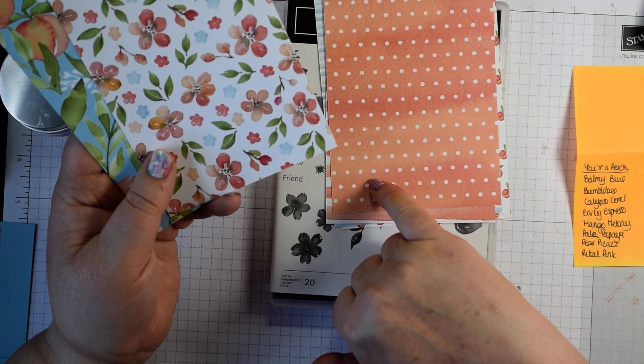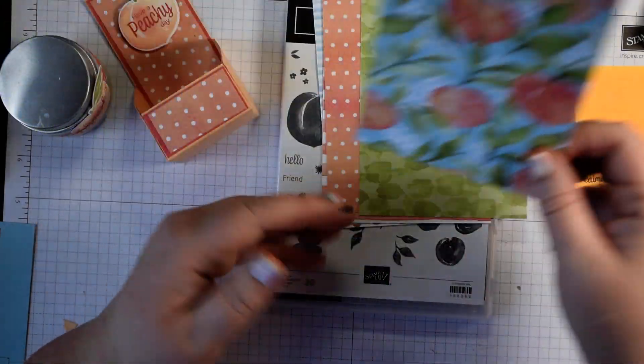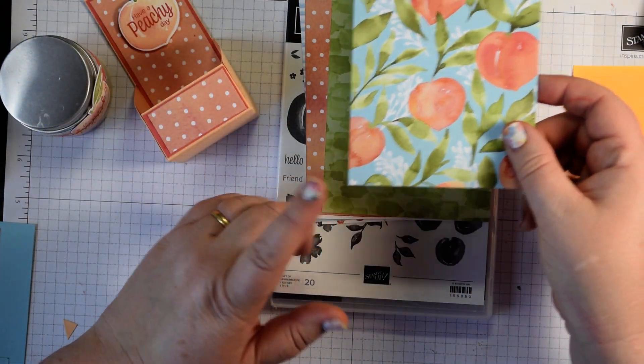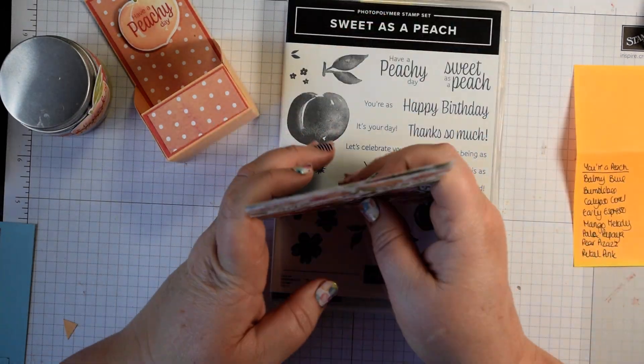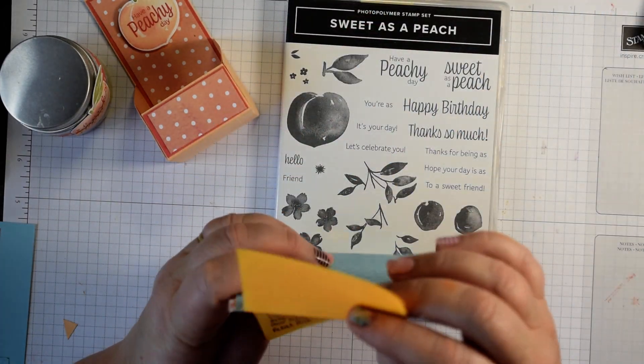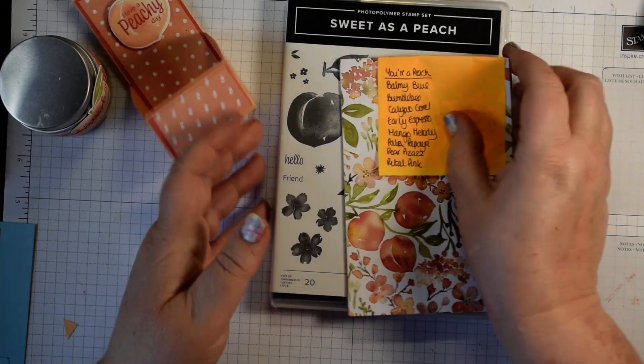I sort of think this one is that lovely peachy pink. Balmy blue again, lovely greens on the back and then this lovely peachy one. I'm going to use this paper for the last, for this item that we're going to make today. So let's get stamping.